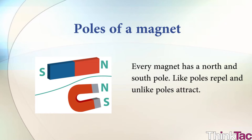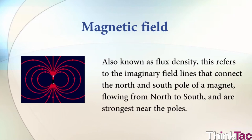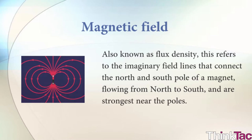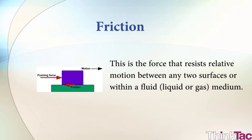The magnetic field, also known as flux density, refers to the imaginary field lines that connect the north and south pole of a magnet, flowing from north to south, and are strongest near the poles. Friction is the force that resists relative motion between any two surfaces or within a fluid — that is, a liquid or a gas medium.